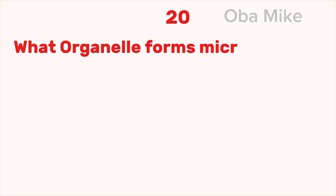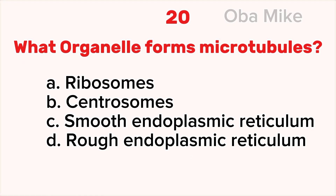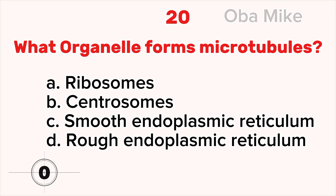20. What organelle forms microtubules? A. Ribosomes, B. Centrosomes, C. Smooth endoplasmic reticulum, D. Rough endoplasmic reticulum. The correct answer is B. Centrosomes.